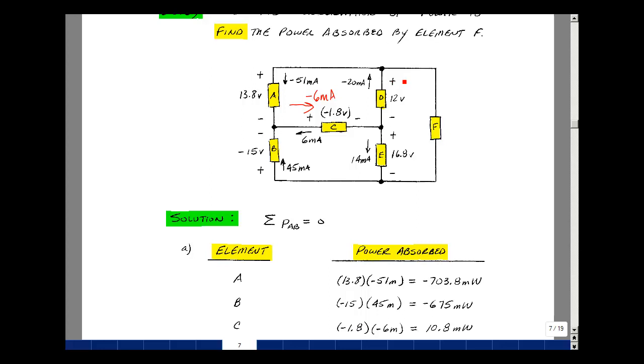For element D, I have to turn the current around to make it power absorbed. This would be 20 milliamps, and the power absorbed would be 12 volts times 20 milliamps, and that's 240 milliwatts.